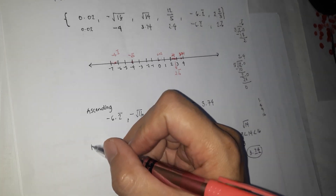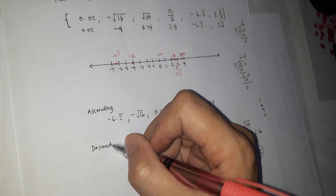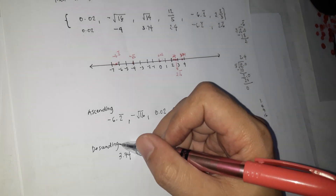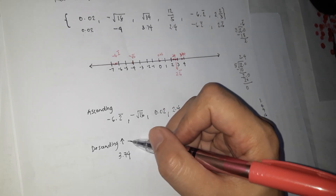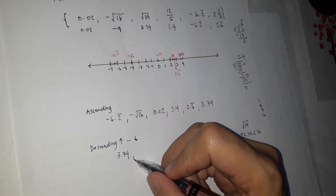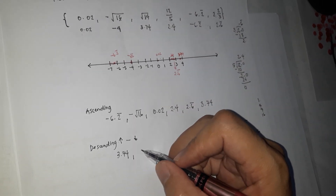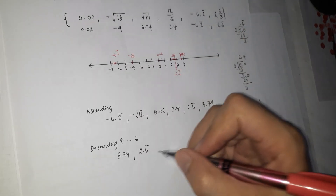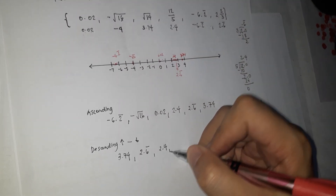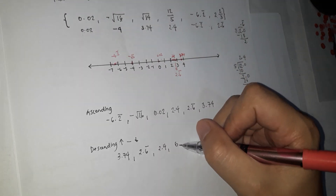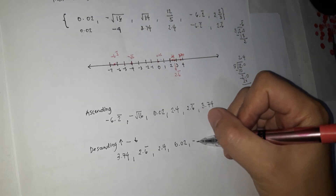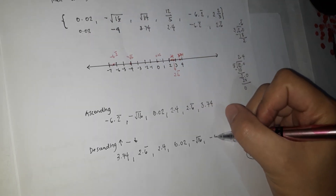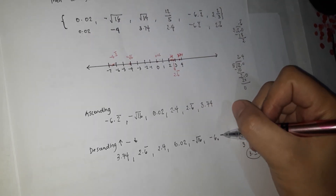Descending order is just the reverse of ascending — from greatest to lowest. So: square root of 14 (3.74), then 2.6 bar, then 2.4, then 0.02, then negative square root of 16, and finally negative 6.2 bar.